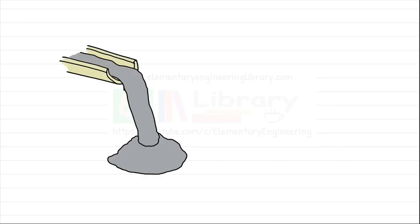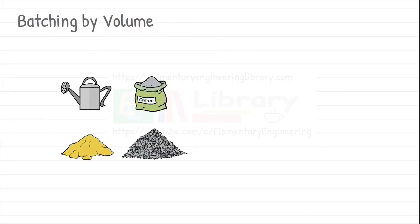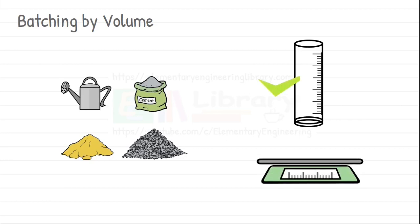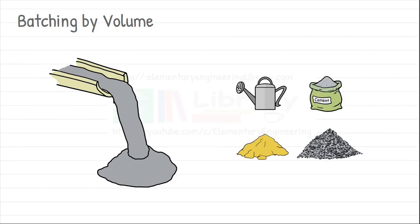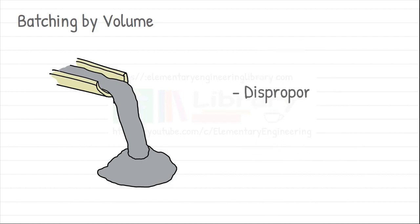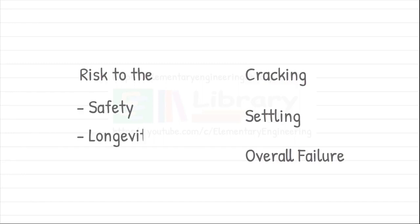For example, if we create a concrete mix and adopt batching by volume method. Batching by volume means materials used are measured by volume rather than by weight. Then, while creating such concrete mix, if we don't consider the bulking of sand effect, the amount of sand will be taken less than required. And our concrete mix will be disproportionate and non-uniform. Such a concrete mix is more prone to cracking, settling and overall structure failure, causing risks to the safety and the longevity of the construction.